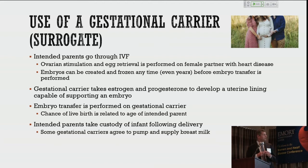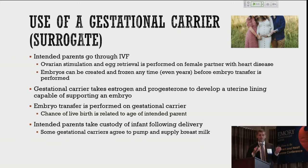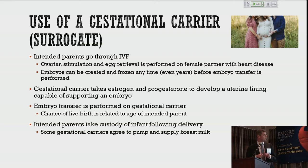Embryos can stay frozen indefinitely. When it's time for her to actually conceive, the gestational carrier will take estrogen for a couple of weeks to build a thick lining in her uterus, then progesterone to cause changes in that lining to support a pregnancy. We put an embryo conceived using the intended parent's eggs and her partner's or a donor's sperm back inside the carrier's uterine cavity. The chance of live birth is related to the age of the intended parent at the time she made her embryos. The intended parents take custody of the infant following delivery.